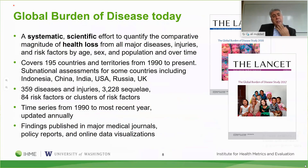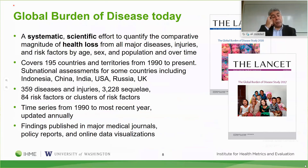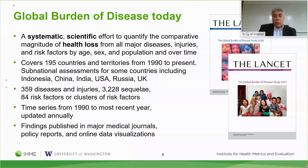The Global Burden of Disease is a systematic scientific effort to quantify, in a comparative magnitude, all health loss from major diseases, injuries, and risk factors by age and sex over time from 1990 until now. For many countries we do this at the sub-national level—Indonesia, China, India, USA, Russia, UK, Mexico, Pakistan. For the US we're now doing it at the state level, and we have a contract from NIH to do it at the county level by socioeconomic status and by race and ethnicity as well.